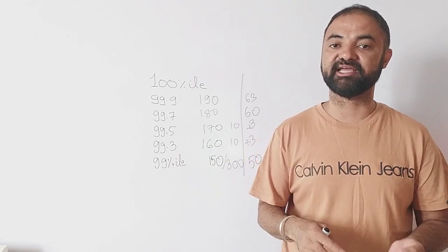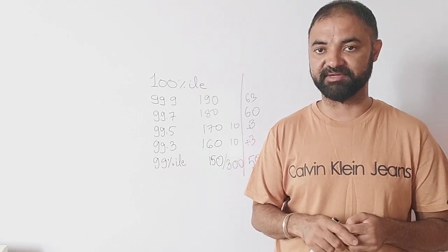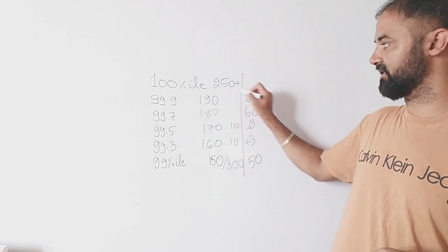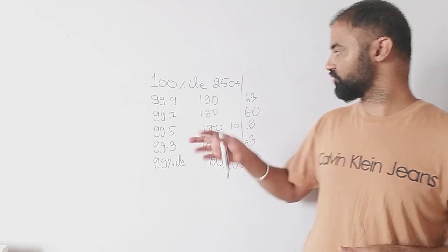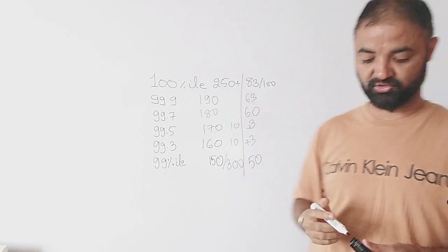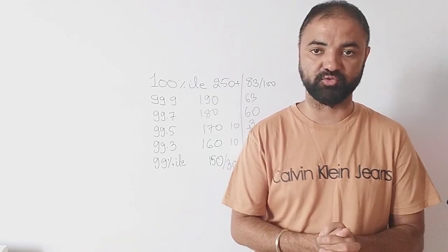This is based on the scale score which they gave last year, on the basis of the CAT 2018 paper. 100 percentile last year - anyone who scored 250 plus was given 100 percentile. So 250 divided by 3, approximately 83 plus correct questions out of 100 was around 100 percentile. But that's again a scale score, that's not a raw score.